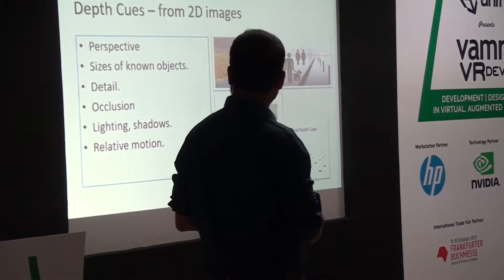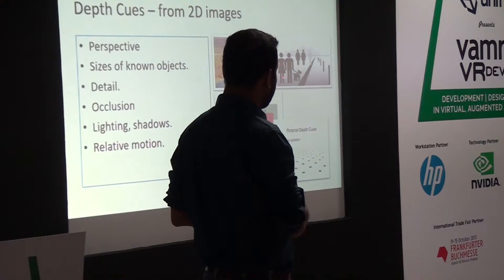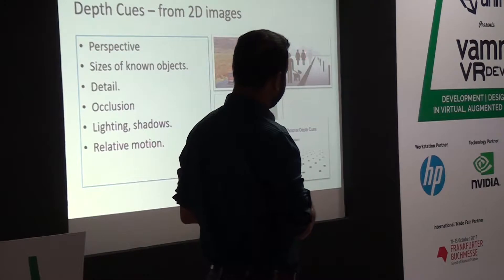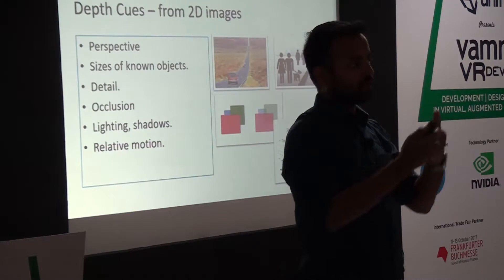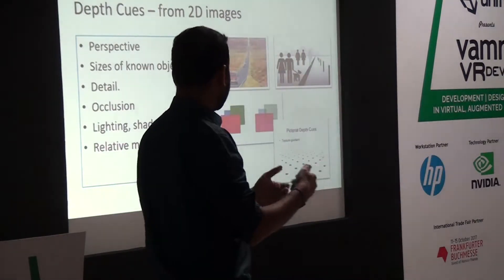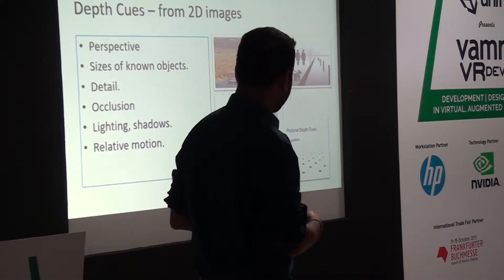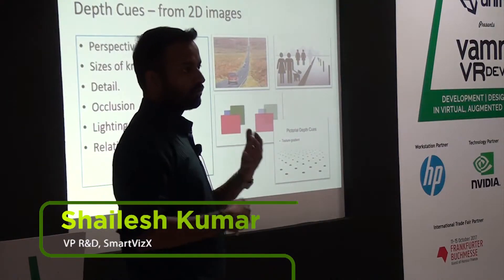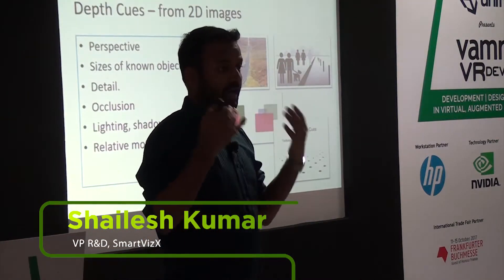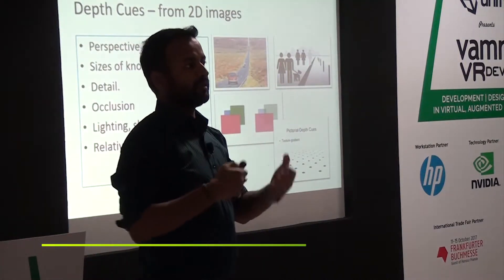Another depth cue is the sizes of known objects. We know the average human height, so if one person appears larger than another, we perceive that the larger one is closer and the smaller one is further away. Occlusion is another cue — something which occludes something else must be in front of it. Lighting, shadow, and relative motion all contribute. We don't even realize what goes on between our eye and brain that makes us perceive depth.